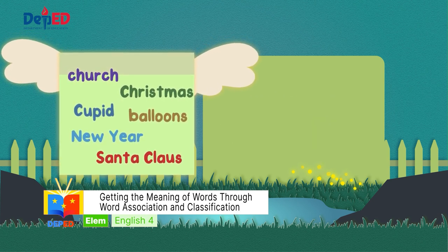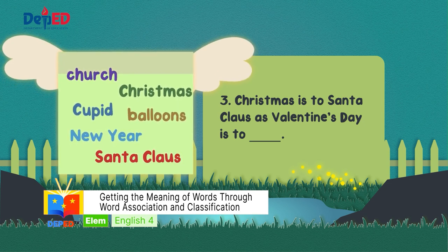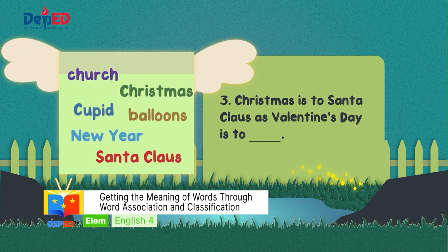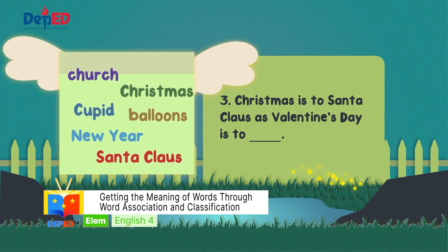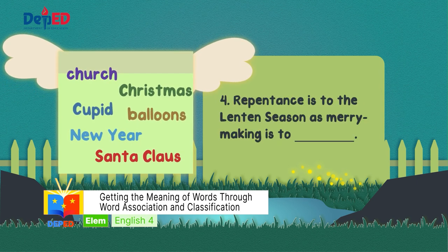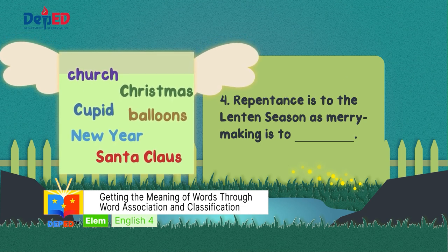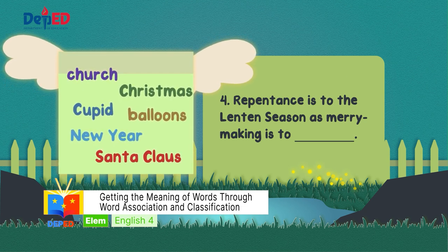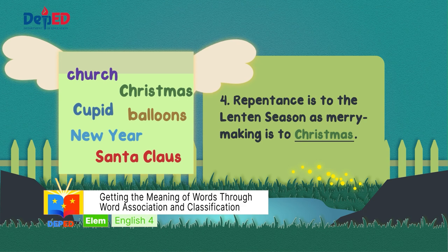The next item is number three: Christmas is to Santa Claus as Valentine's Day is to blank. Cupid can be paired with Valentine's Day. For number four: repentance is to the Lenten season as merrymaking is to blank. Merrymaking can be paired with Christmas.